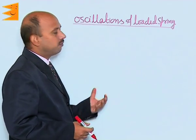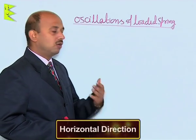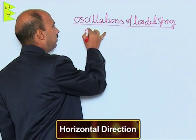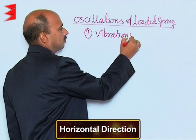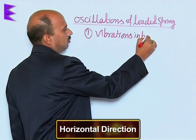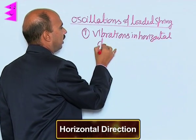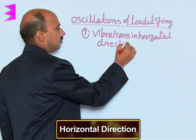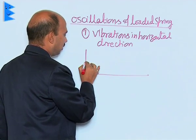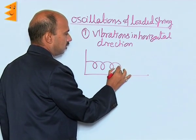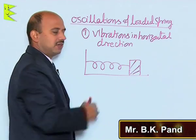Now, we will see oscillations of a loaded spring. The first one is vibration in horizontal direction. Suppose you have taken a spring like this and a mass is attached here, and this surface is frictionless.